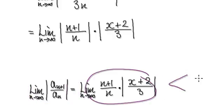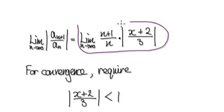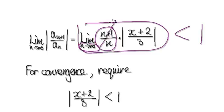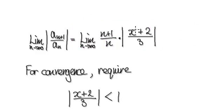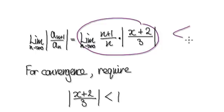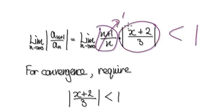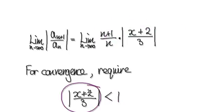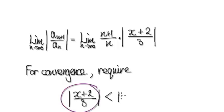We need to get this to be less than one for convergence. So for convergence, we set this to be less than one. Don't forget — the limit as n tends to infinity of this term here is going to head towards one. So for this whole thing to be less than one, we just need to concentrate on making this part less than one, because the other factor is going to be the number one.